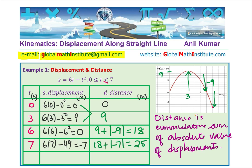Here is an exercise for you. When time is 5 seconds, substitute t equals 5 into the formula — find the displacement and also find the total distance covered in the first 5 seconds.